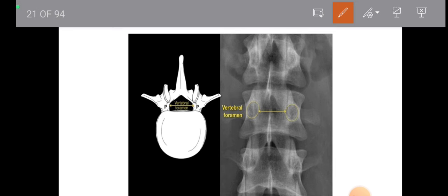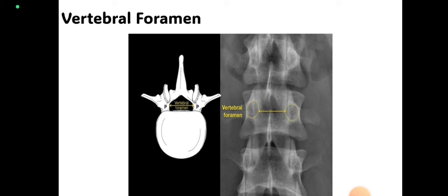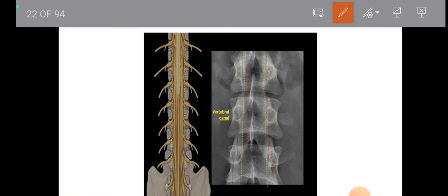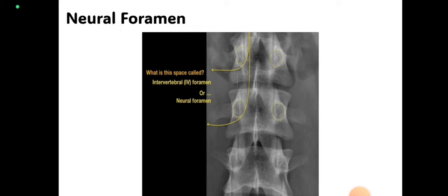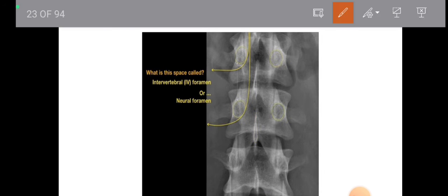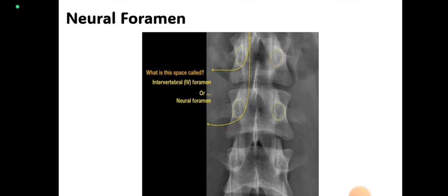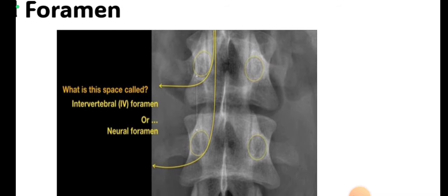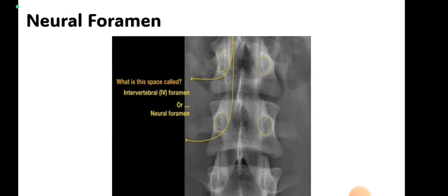Between both pedicles there will be a vertebral foramen through which the spinal cord will pass — we have to assume it as it is not visible on x-ray. Here you can see two vertical lines between two pedicles representing the vertebral canal. The neural foramen is also not visible in the frontal view, but nerves pass below the pedicles — here the white dotted lines represent the neural foramen through which nerves exit to supply the lower limb muscles.